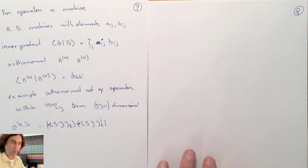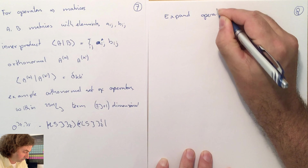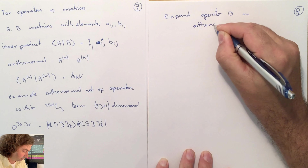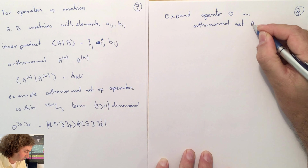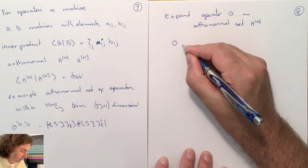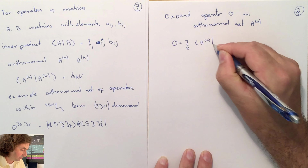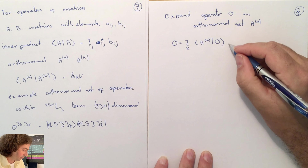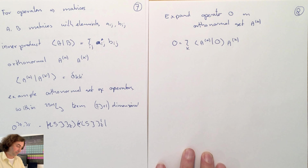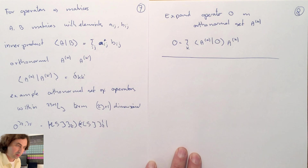Now if you want to expand an operator on an orthonormal set, and we have a complete set of operators, then our operator is given as a sum over all operators in our orthonormal set of operators — the inner product between the operator we are looking at and the basis operator, times that basis operator. So now let's use this to expand the spin-orbit coupling operator in powers of J.